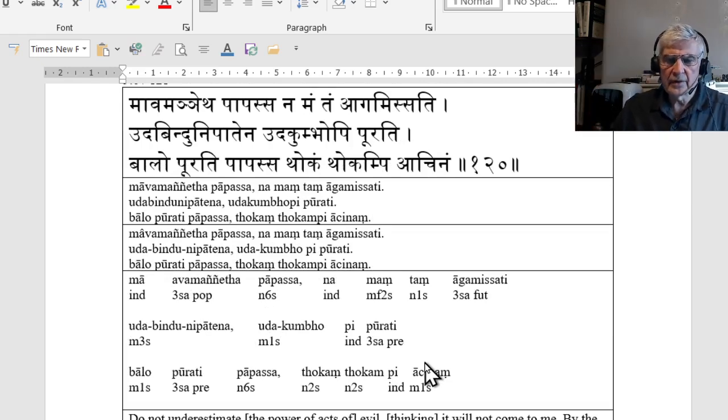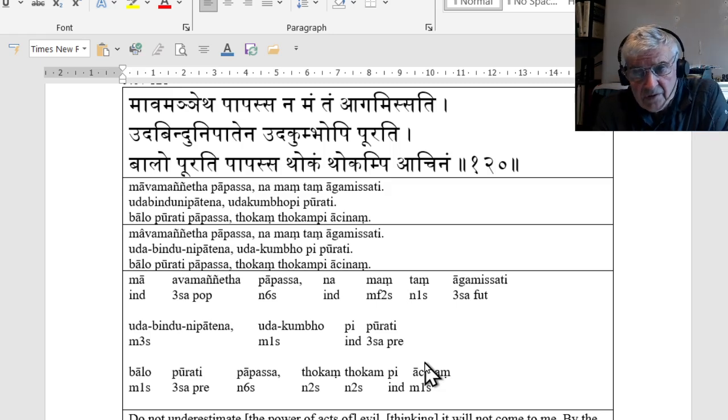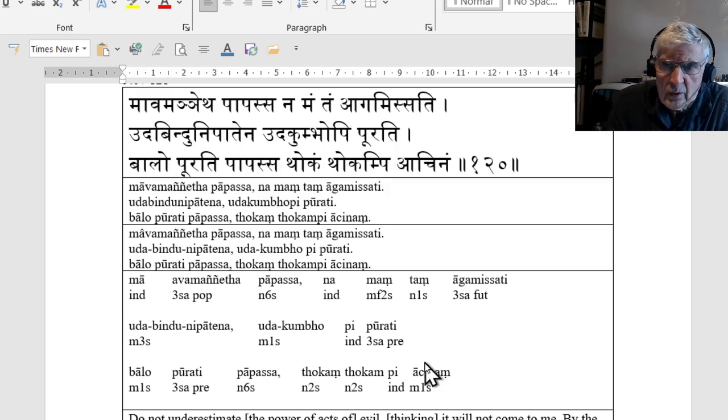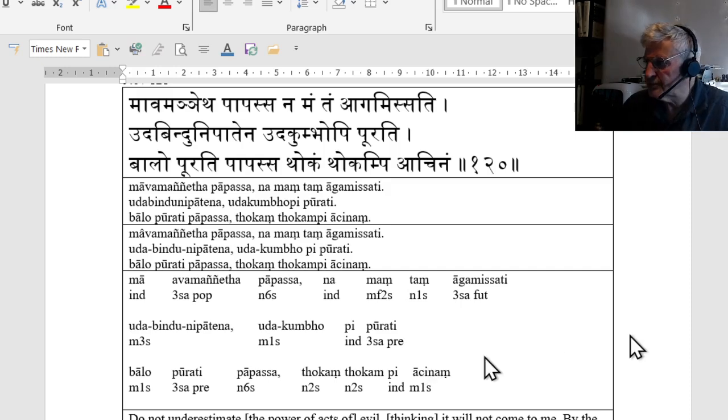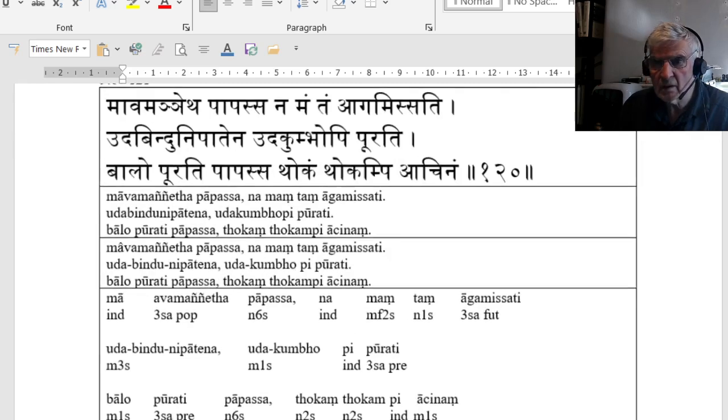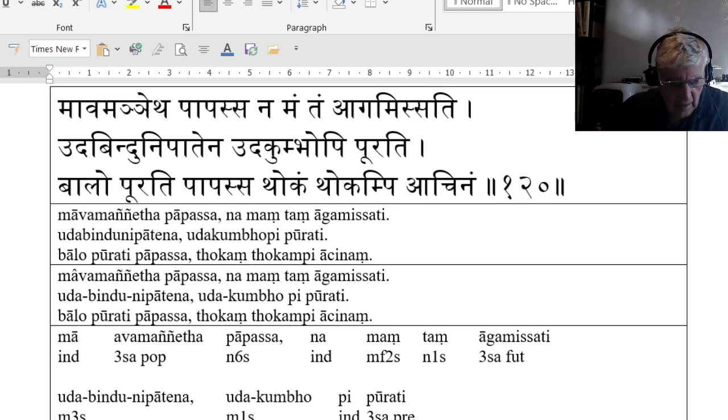So the main verb in the first line, in fact the first line constitutes a sentence with a main clause and a subclause, is avamanyeta. And avamanyeta is to, it can be translated as despise or hold in contempt or place something down in your mind or, as a mild word, underestimate it. Let me enlarge the text a bit. Here we are. It's from the root man.